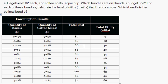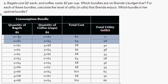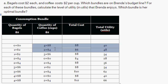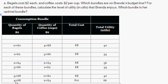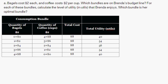So the first thing is: which of these bundles are on Brenda's budget line? The bundles on Brenda's budget line are those that sum up to $8. She has $8 to spend, and to maximize her utility she's going to spend all of her $8 — she's not going to spend anything less. So let's block out anything less than $8. And she can't do any consumption bundle more expensive than $8, so we delete those too. That leaves these bundles right here.